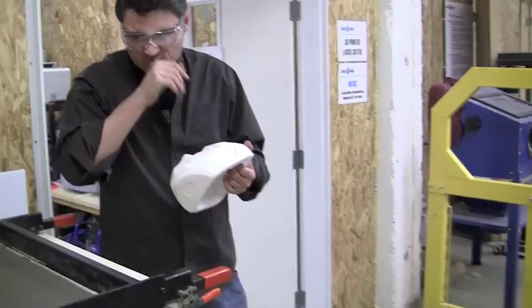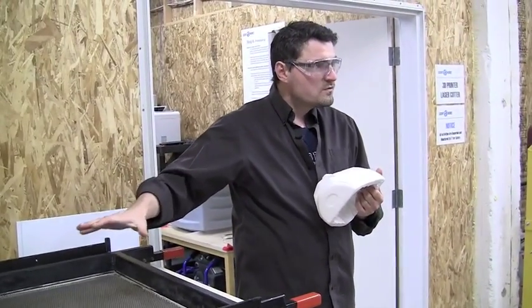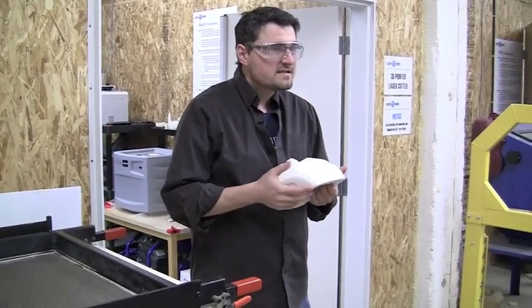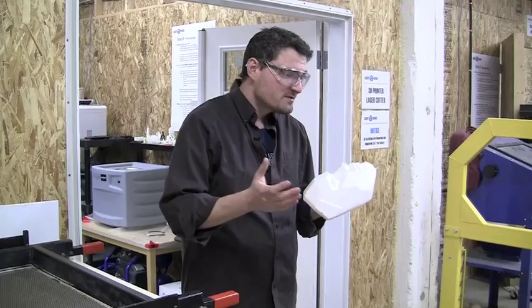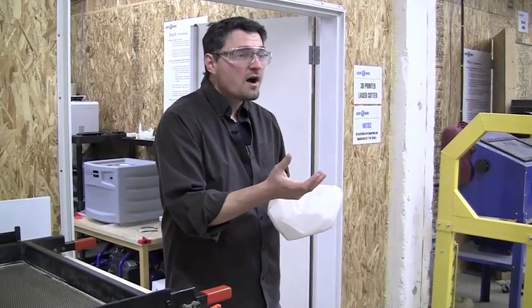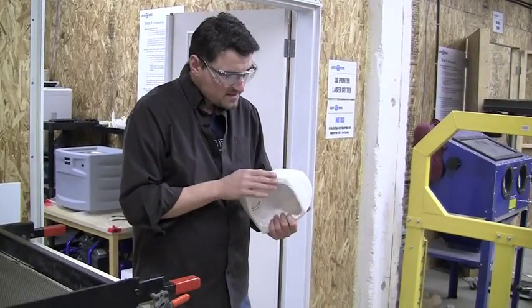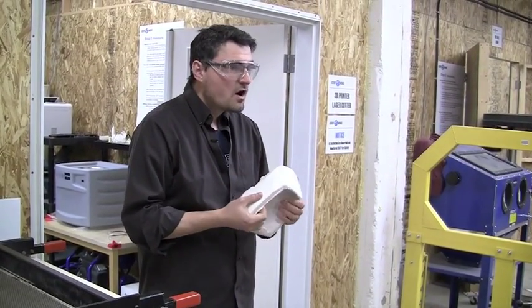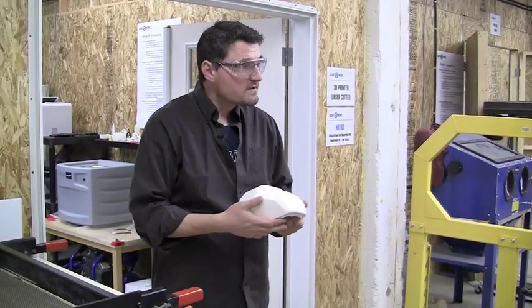You don't want to put anything soft in the vacuum former because you are creating a vacuum in the space that the object is going to sit in. So if you try vegetables or a raw egg, it will crush because of the atmospheric pressure. This nice, hard, made of plaster, it's a nice mold to use for the vacuum former.